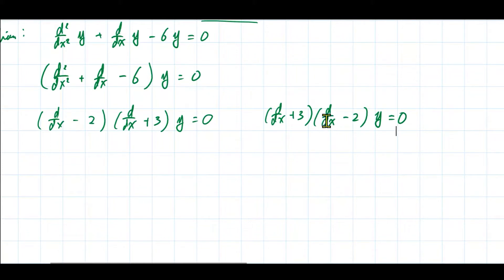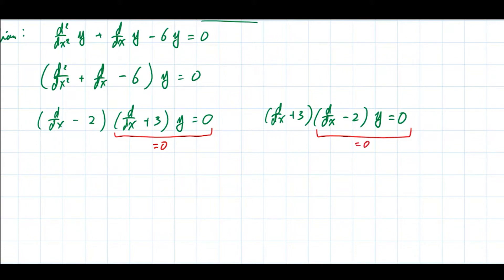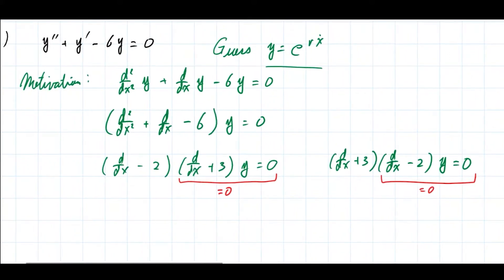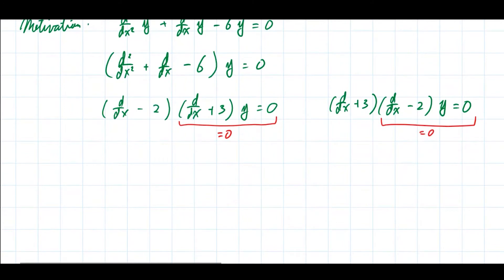With derivative operators the order doesn't matter — mathematicians call these linear operators. The key observation is: for the product to equal zero, either this factor equals zero or that factor equals zero. So we can split the problem: either one first-order ODE or the other needs to be zero.